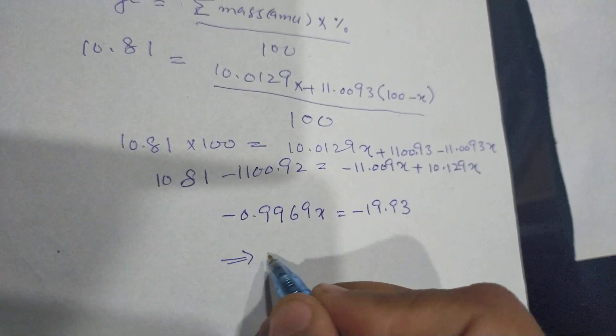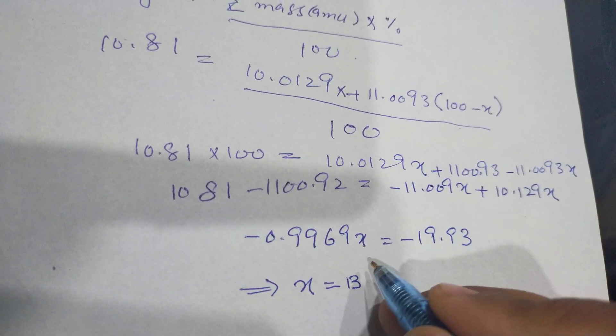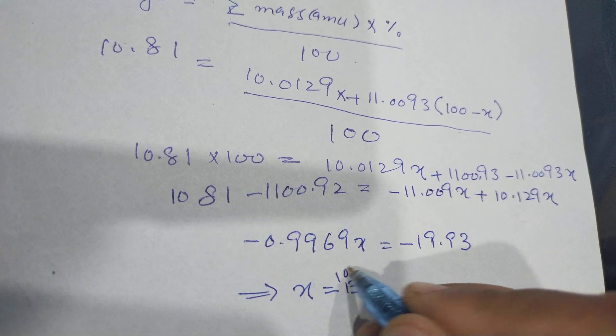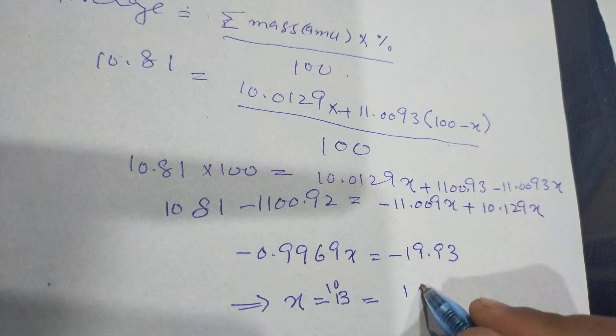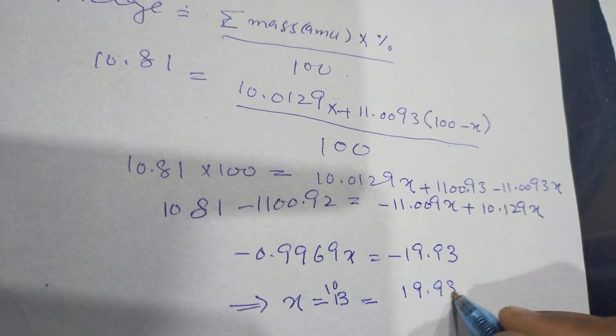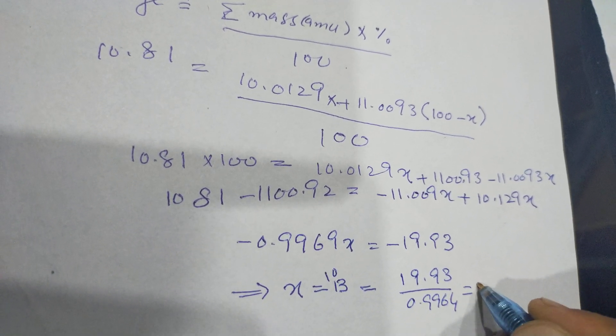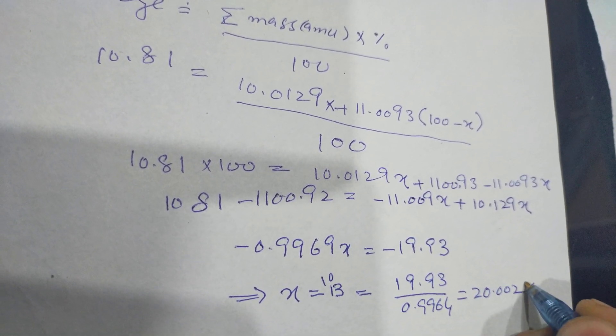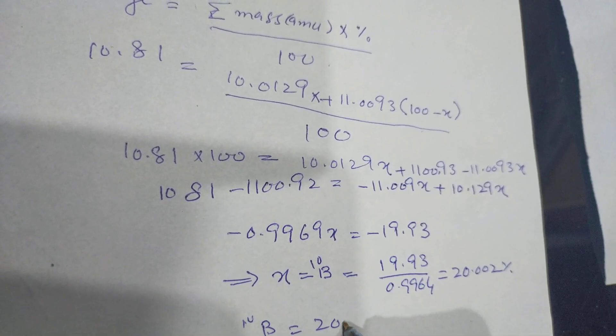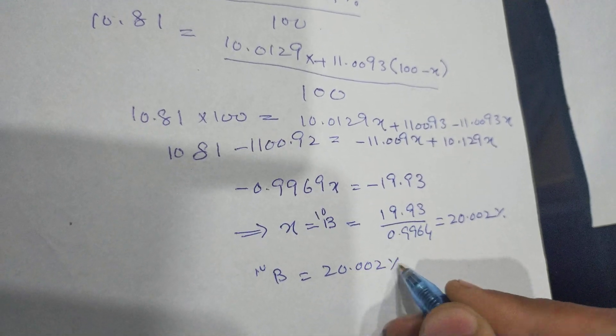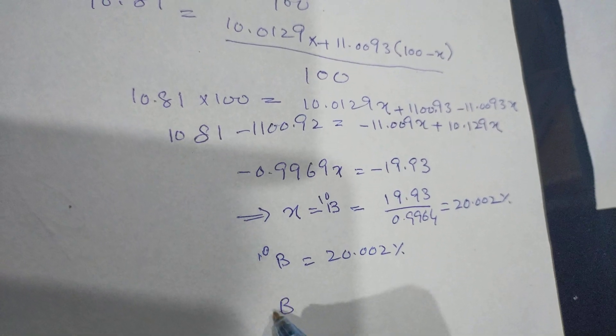Simply here we can calculate X, which is equal to Boron-10 isotope, is equal to 19.93 divided by 0.9964, which is equal to 20.002%. It means that Boron-10 isotope has 20.002% relative abundance.